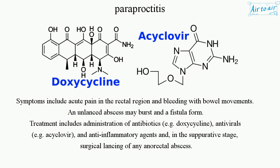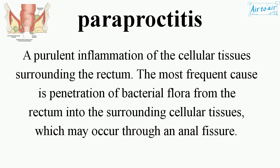An unlanced abscess may burst in a fistula form. Treatment includes administration of antibiotics, e.g. doxycycline, antivirals, e.g. acyclovir, and anti-inflammatory agents, and in the suppurative stage, surgical lancing of any anorectal abscess.